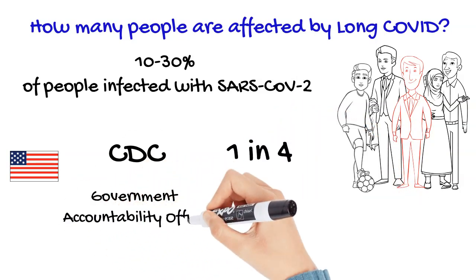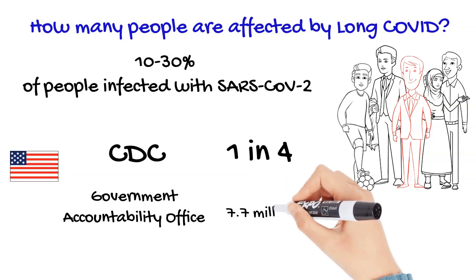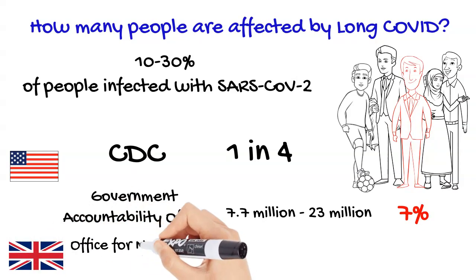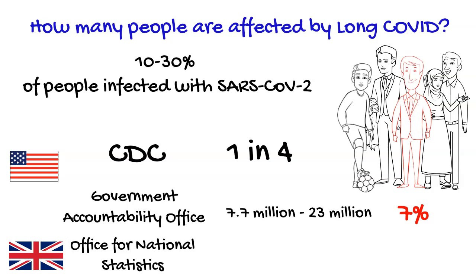According to the US Government Accountability Office, long COVID may currently already affect between 7.7 million and 23 million Americans, which is up to 7 percent of the US population. According to the UK Office for National Statistics, the number of people experiencing self-reported long COVID is 1.7 million as of March 2022. That is 2.7 percent of the UK population. Of these, 1.1 million had symptoms severe enough to adversely affect their day-to-day activities.